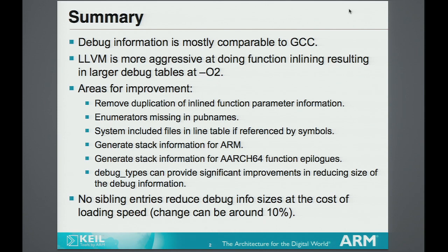What I found was the debug information is mostly comparable to GCC — but I say mostly. There are areas where it's lacking. The most obvious being variable tracking as you optimize. In my example, I actually found LLVM was much more aggressive at function inlining at O2. I subsequently tried O3 and actually found GCC shot out and really got its stride.